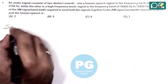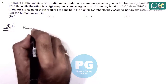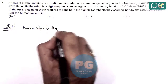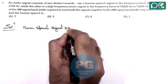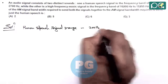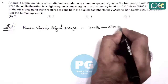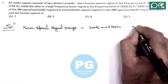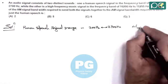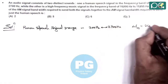We are given that the human speech signal range is 200 Hz to 2700 Hz. If we calculate the frequency bandwidth of the human speech signal, this is 2700 minus 200 Hz, which gives us 2500 Hz.